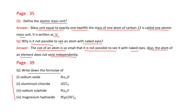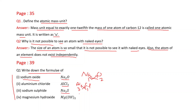Next question: Write down the formula of the following compounds. For sodium oxide: sodium has valency 1, oxide has valency 2 — interchange to get Na₂O. For aluminium chloride: Al has valency 3, chloride has valency 1 — interchange to get AlCl₃.